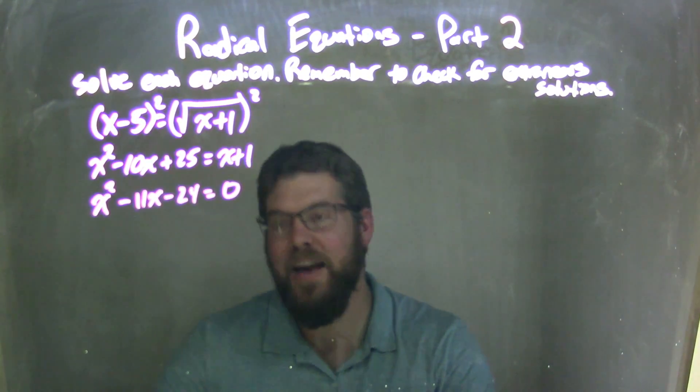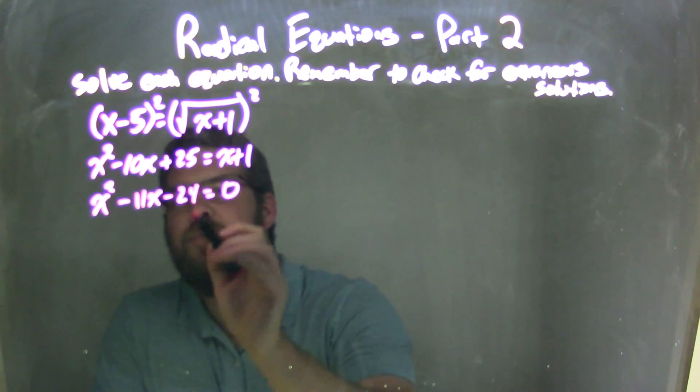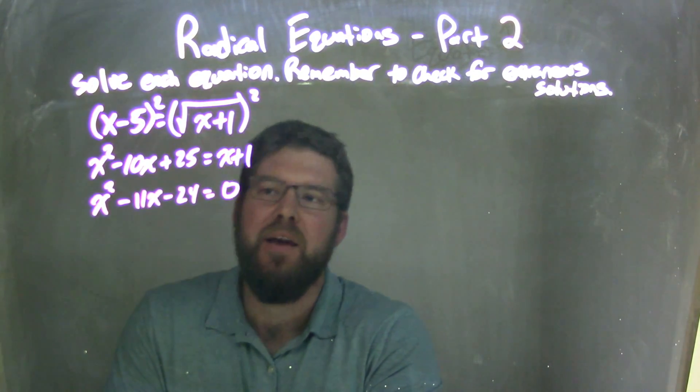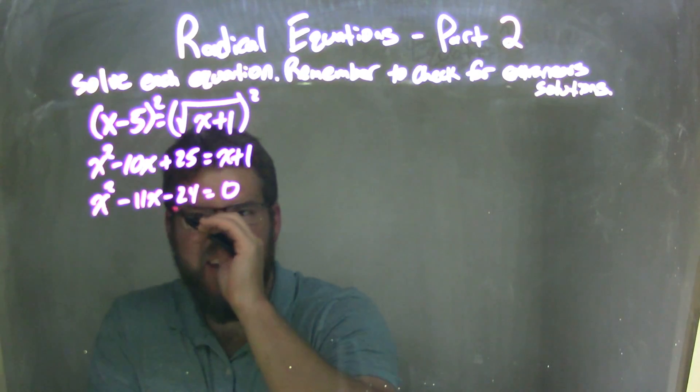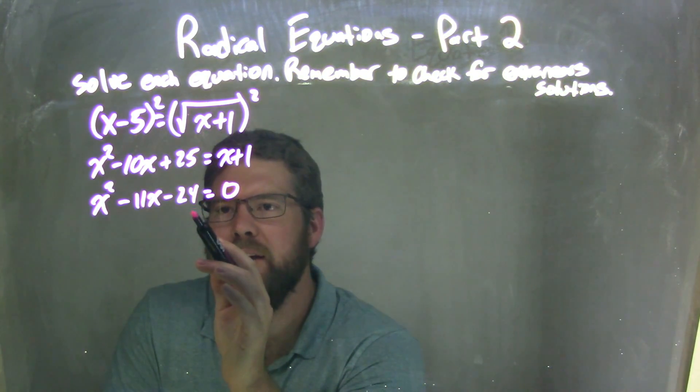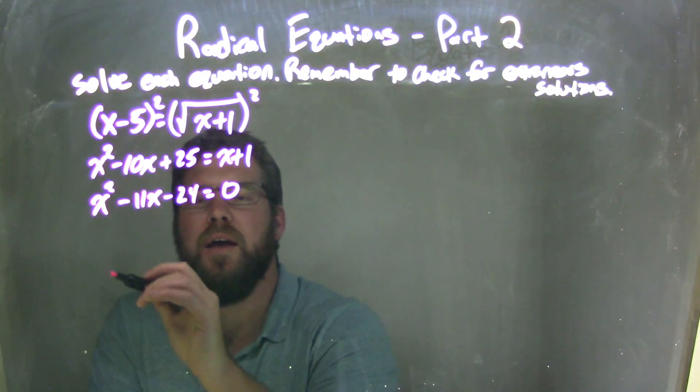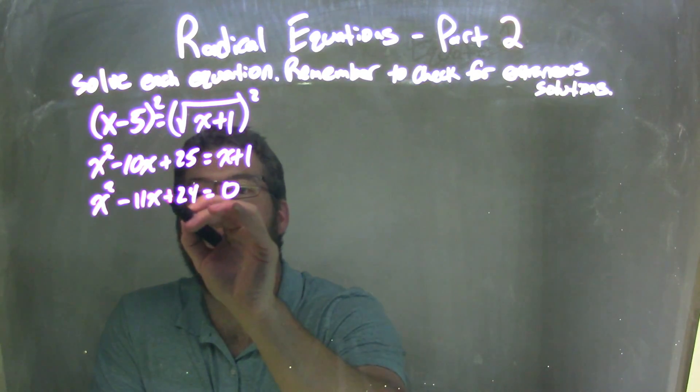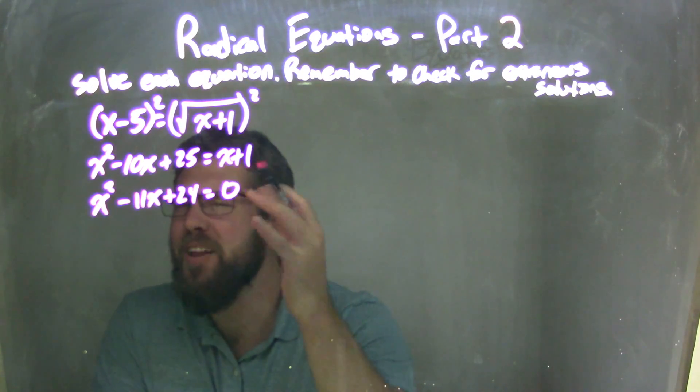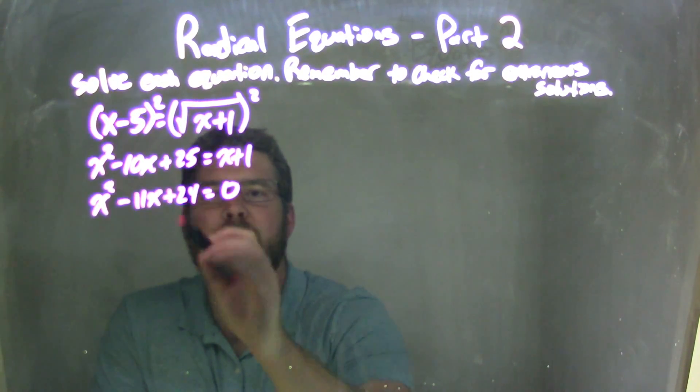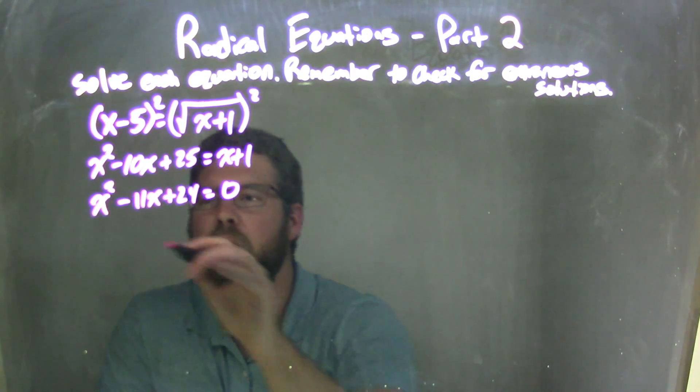Now, we need to factor this. What two numbers multiply to be negative 24 but add to be negative 11? And what I'm thinking here is, what two numbers multiply to be negative 24 and add to be negative 11? Oh, positive 24, I'm sorry, it's positive. I was trying to think that one through. Positive 24, right? 25 minus 1 is a positive 24. We all make mistakes. It's all good.